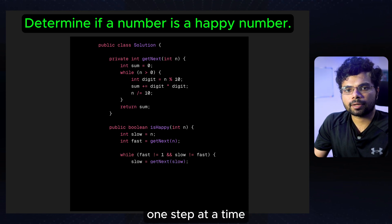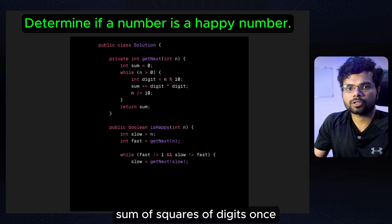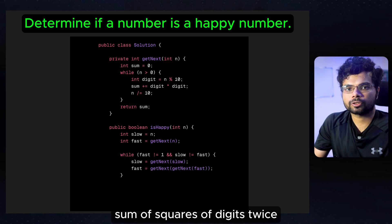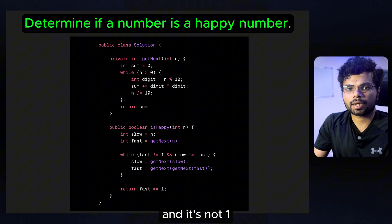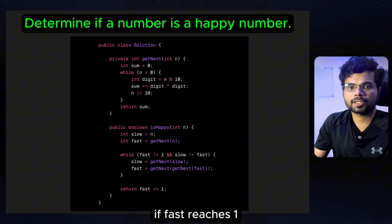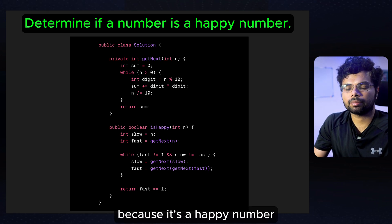And move the fast pointer two steps at a time, which means sum of squares of digits twice. If slow equals fast and is not 1, return false, because a cycle has been detected. If fast reaches 1, return true, because it's a happy number.